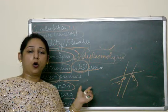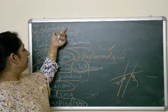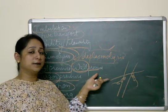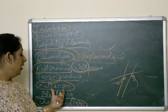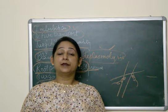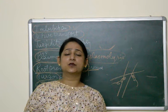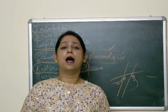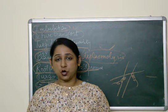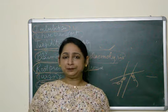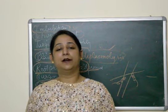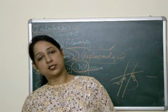I have one by one explained all the definitions: starting from imbibition, active transport, turgidity and flaccidity, plasmolysis, deplasmolysis, root pressure, turgor pressure, wall pressure, guttation, bleeding, and transpiration. In my next video, I will be taking up the experiments related to plant physiology, which will explain these definitions and clarify the topic. Please do watch. Thank you.